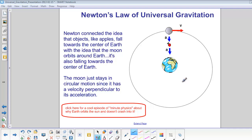but Newton was the first person that connected the idea that objects like apples fall towards the center of the Earth with the idea that the moon orbits around the Earth.